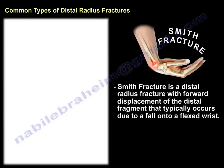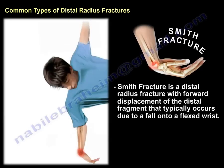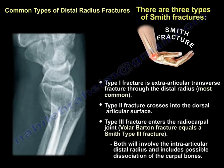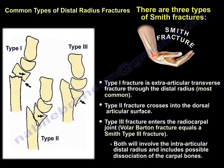Smith fracture can occur from a fall onto a flexed wrist. It has multiple types: Type 1 is an extra-articular transverse fracture through the distal radius and is the most common. Type 2 crosses into the dorsal articular surface. Type 3 enters the radiocarpal joint, similar to a volar Barton fracture — so volar Barton fracture equals a Smith Type 3 fracture. You can see all three types, where Type 3 looks like a volar Barton and Type 1 looks like a reverse Colles'.